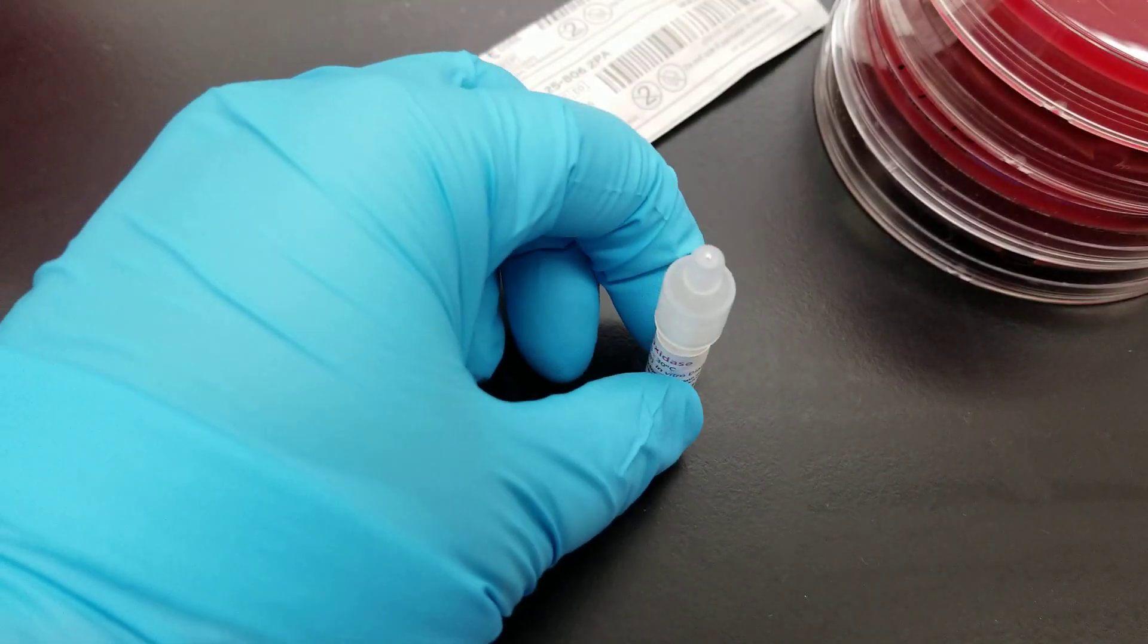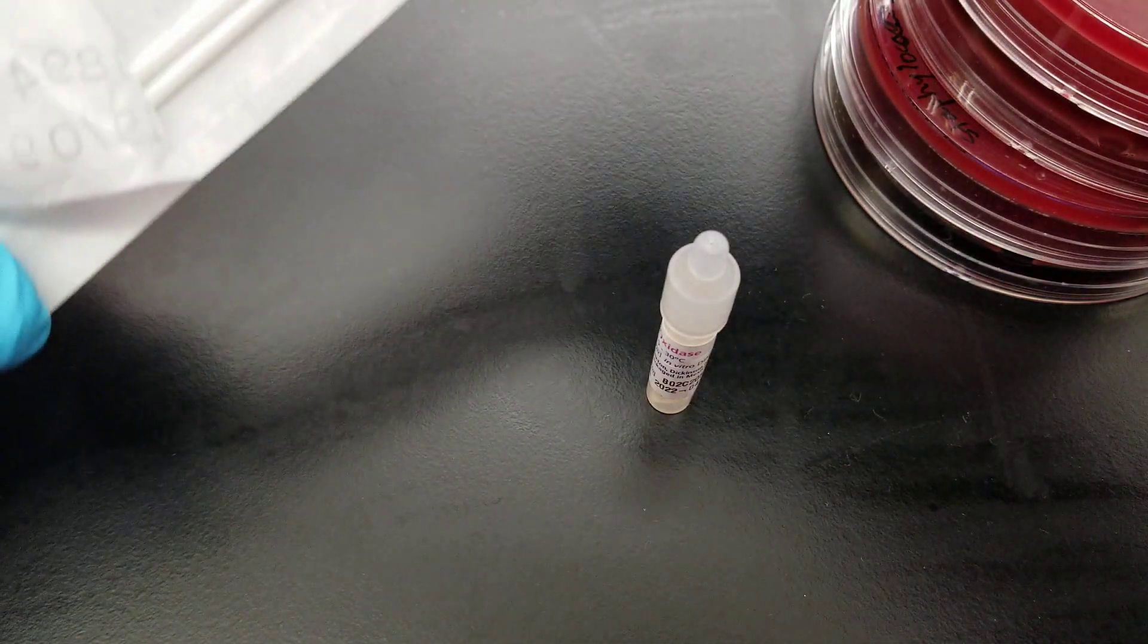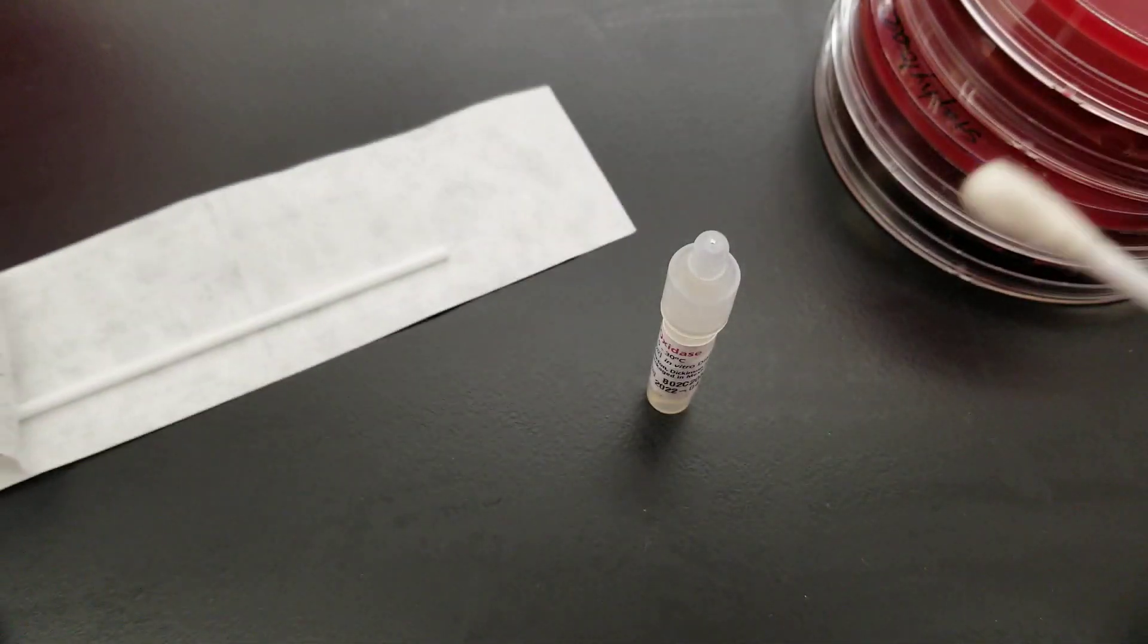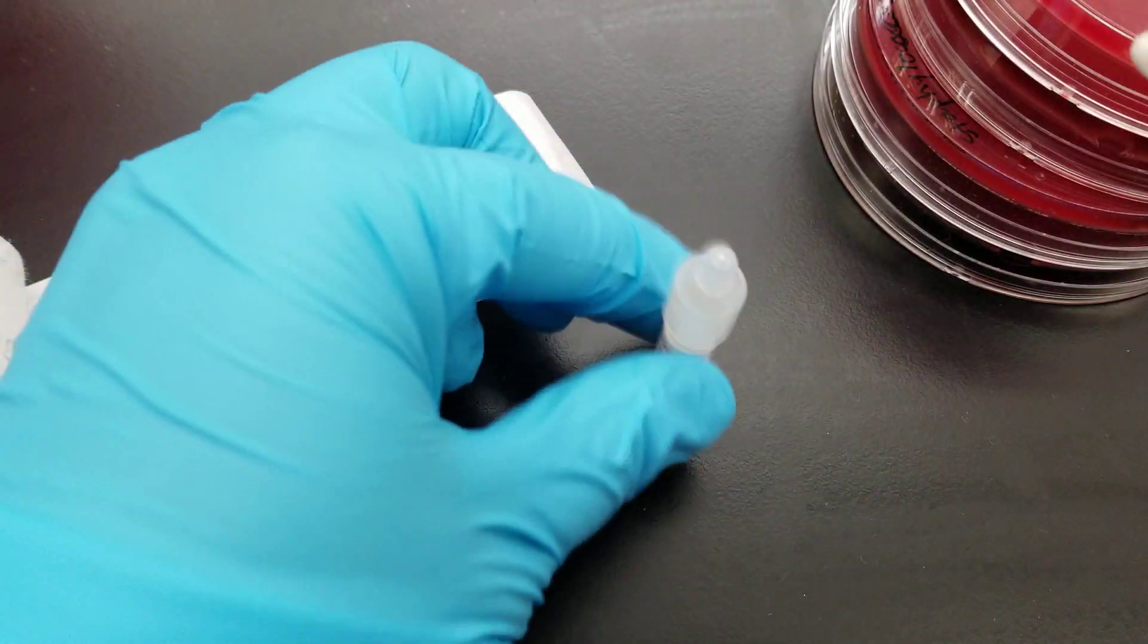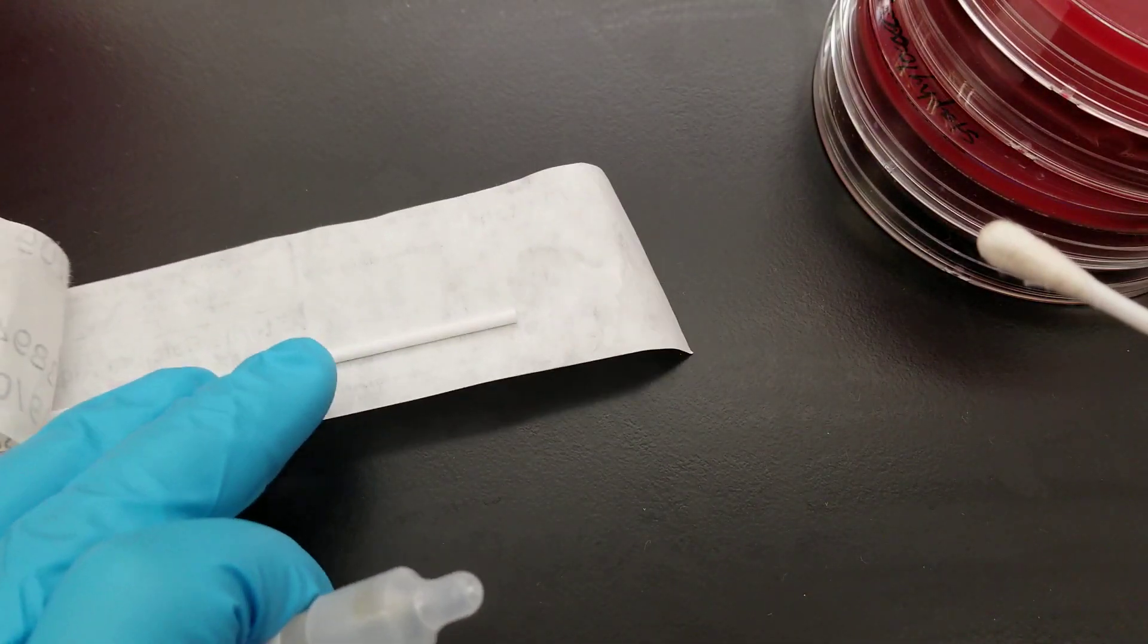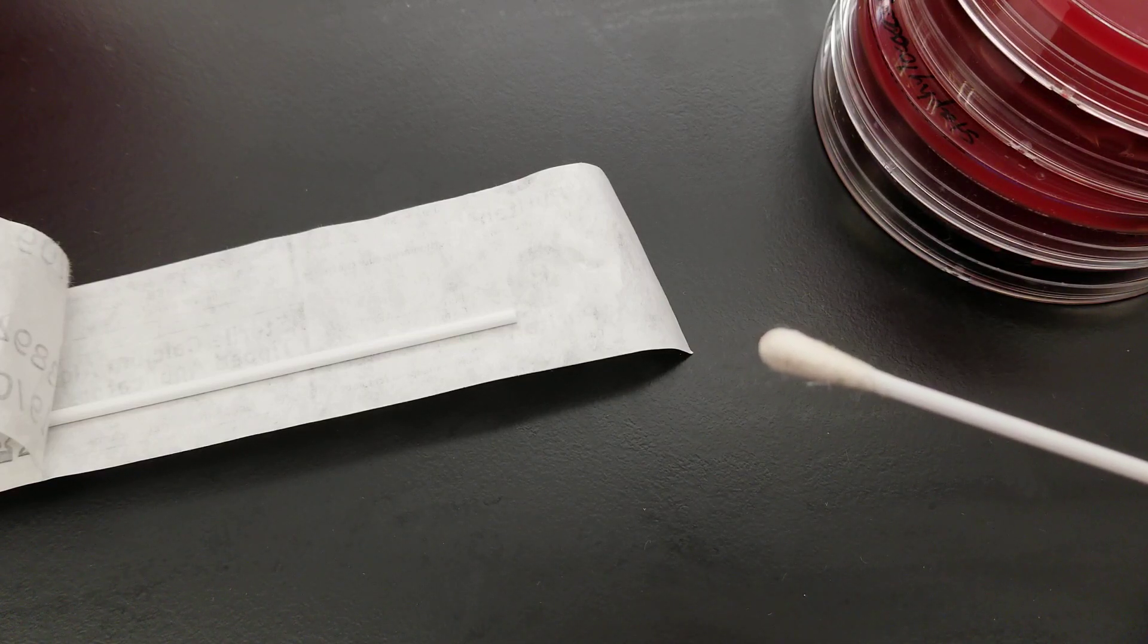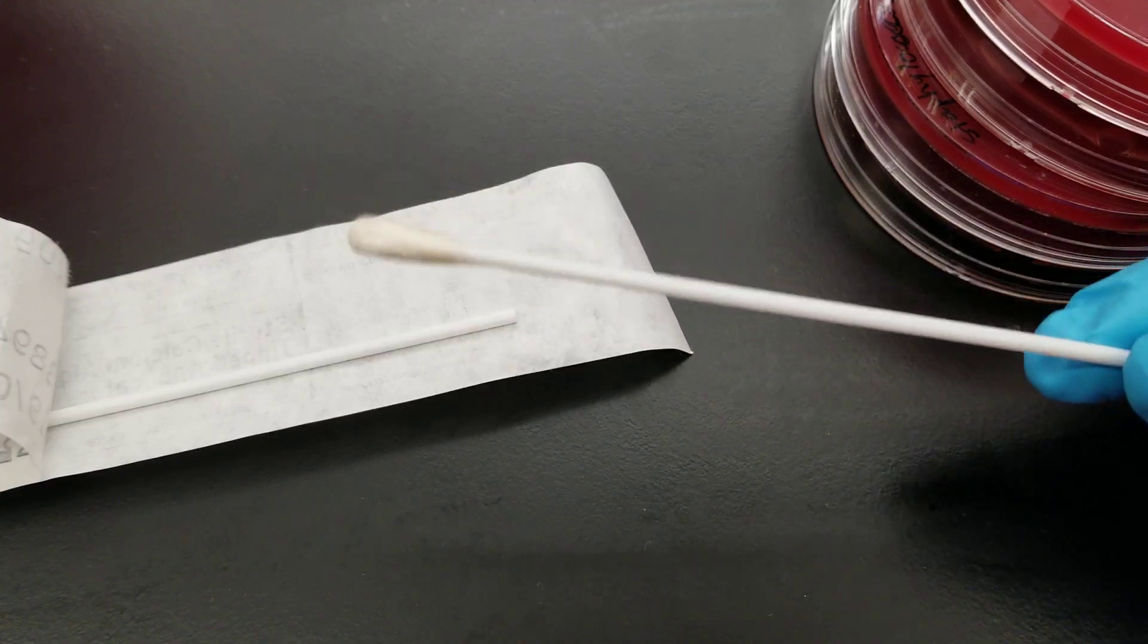We have a sterile swab also right here. There's two within this packet. I'm going to open it up. So the first thing that we do is pick a swab. For our unknown organism, we would pick a colony using the swab. There are different kinds of procedures that you can do with oxidase. You can use a filter paper, you can use a test tube method, or you can use this swab method, which is what we're going to do.